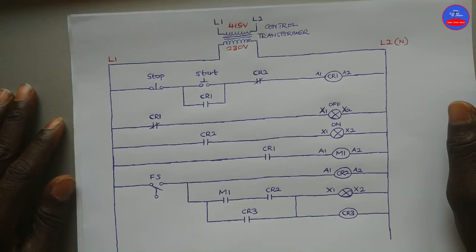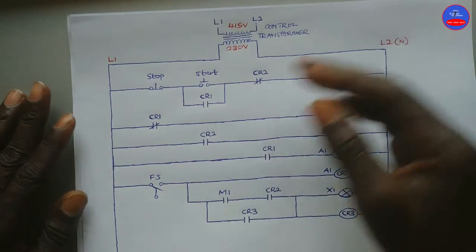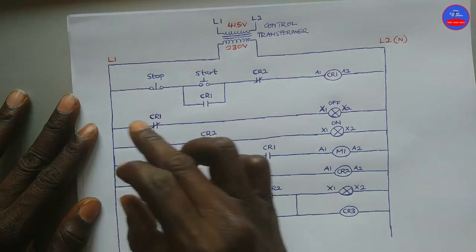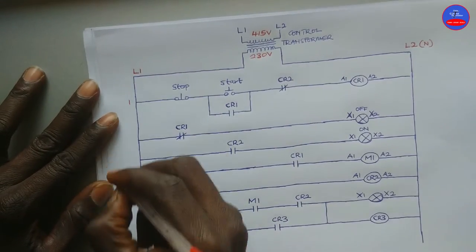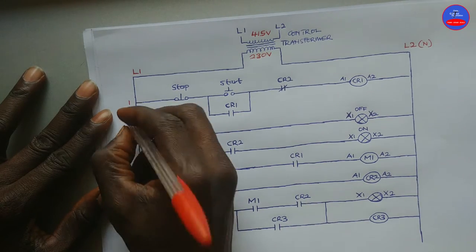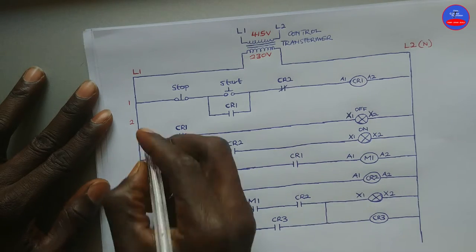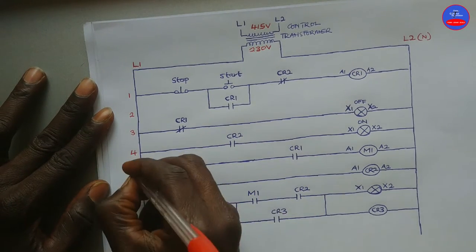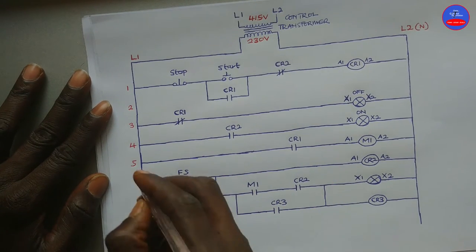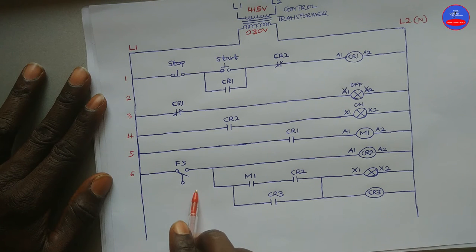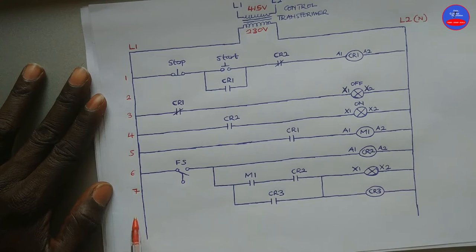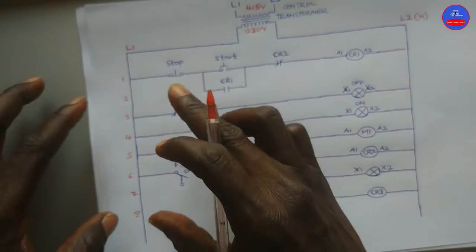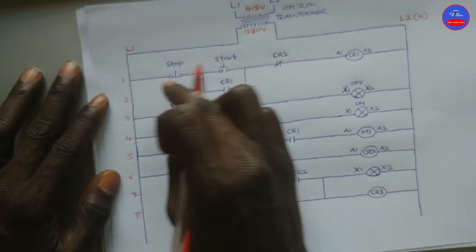We are going to start with line reference numbers. Line reference numbers are read from top to bottom. These are the horizontal lines, and these are the vertical lines. We are going to read the horizontal lines: line one, two, three, four, five, six, seven, and eight. These are the line reference numbers — we only reference the horizontal lines.